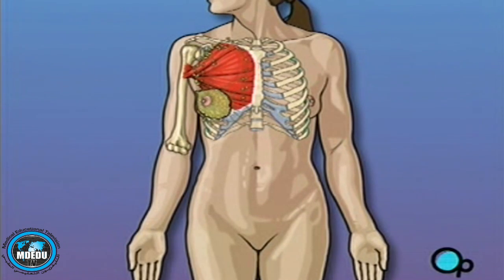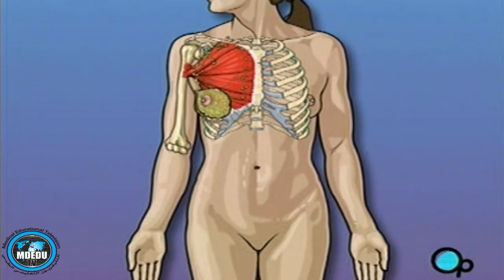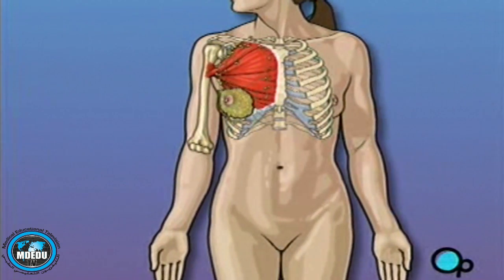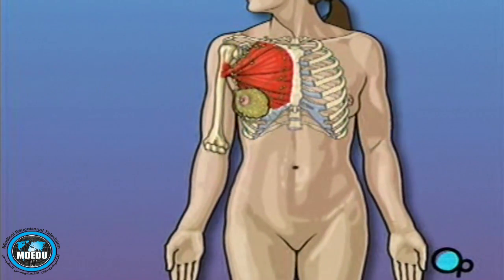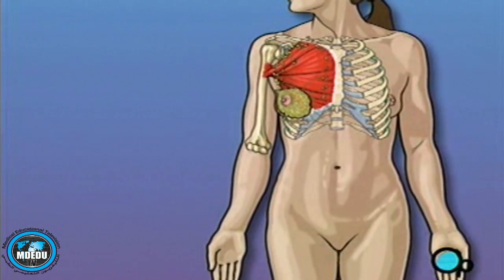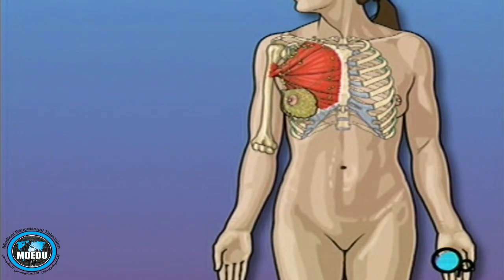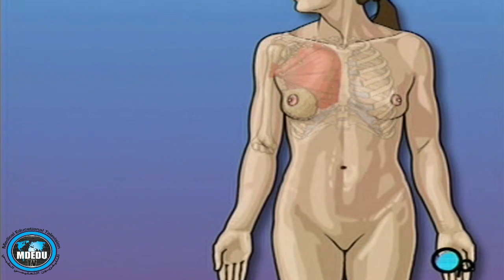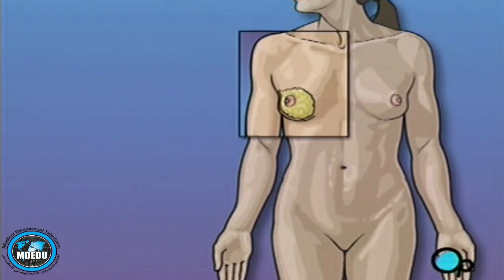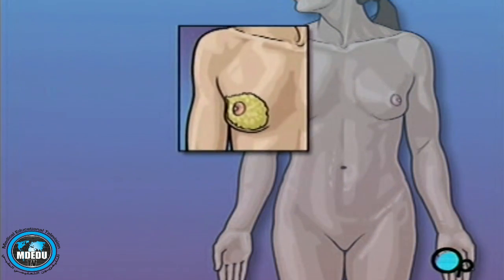In most cases, mastectomy is required in order to remove cancerous tissue from the body. The extent of tissue removed is determined by the amount of cancer present in your body. A modified radical mastectomy is one of the most extensive forms of breast cancer surgery, in that it calls for the complete removal not only of the breast, but of the lymph nodes as well.